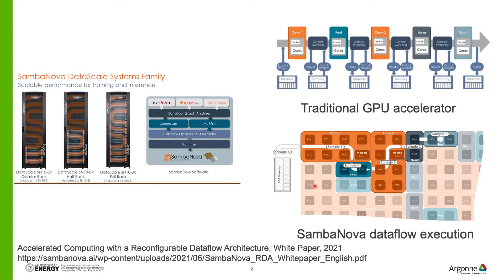By the time we are doing convolution 2, the second convolution operation, the data sample required for convolution 1 can be pipelined — it is staged and can already be operating at the convolution 1 layer. Consequently, there is no data movement from these PMUs and PCUs to main memory, and context switching doesn't happen as much as with the traditional GPU accelerator.